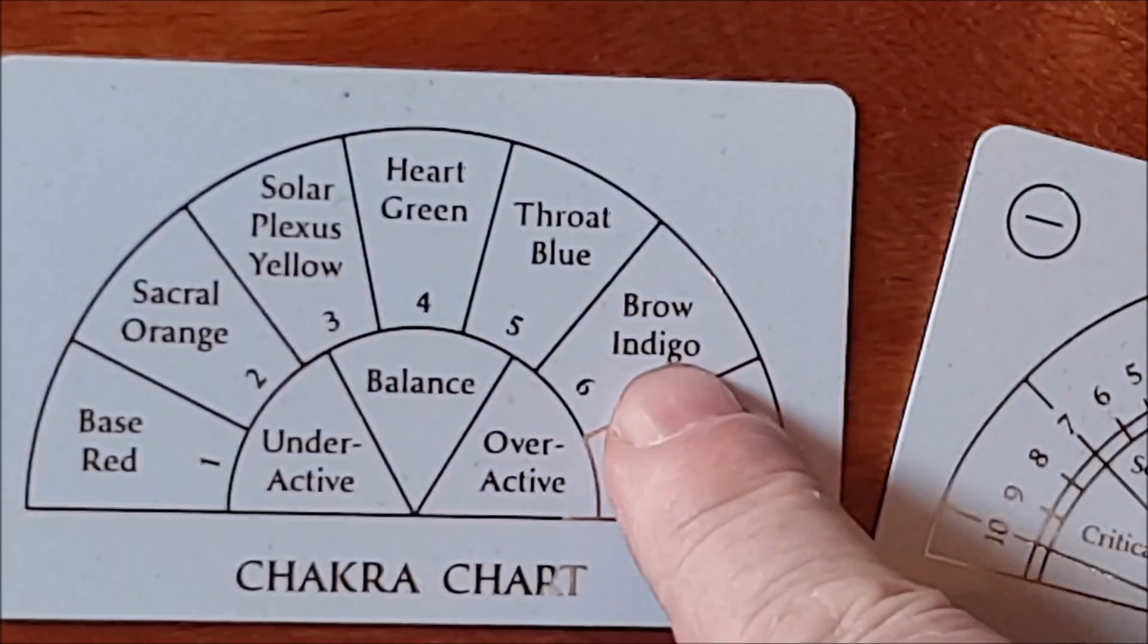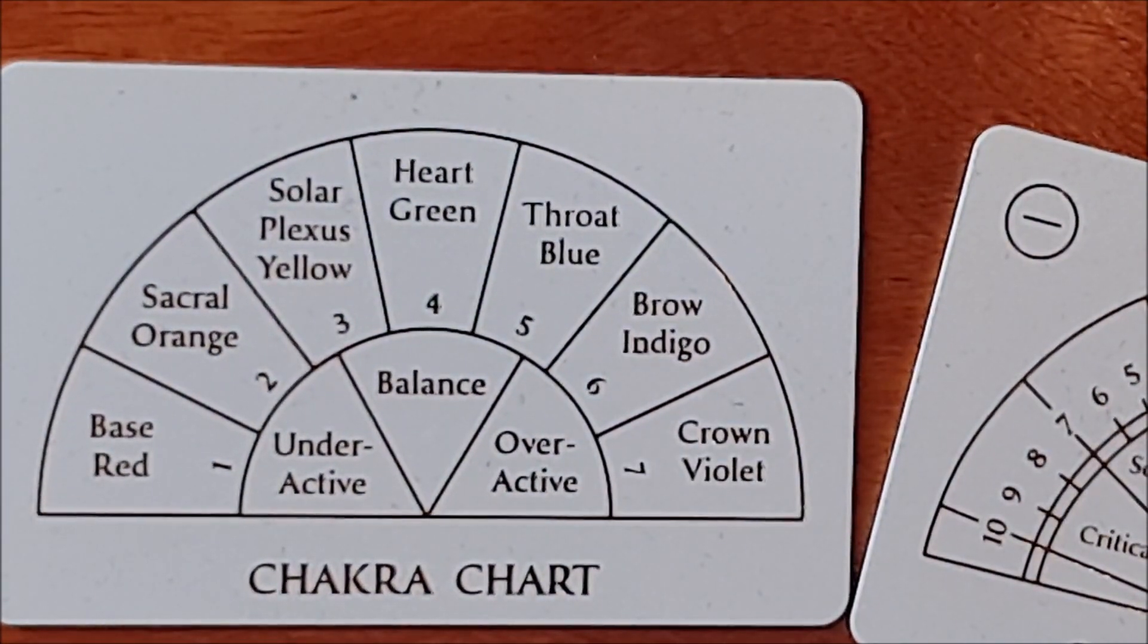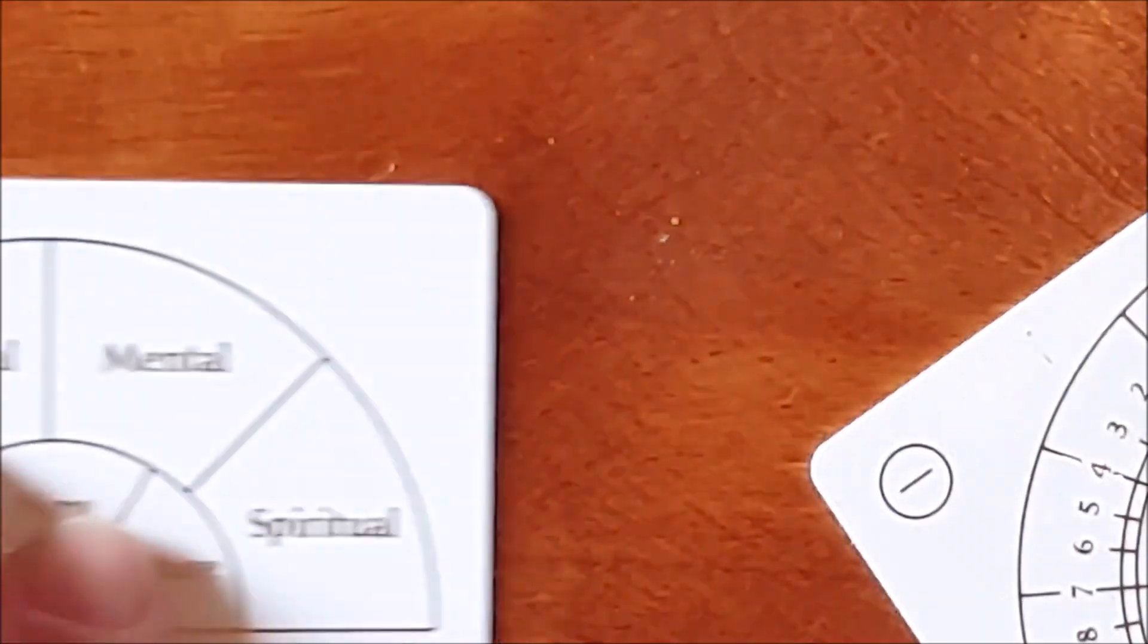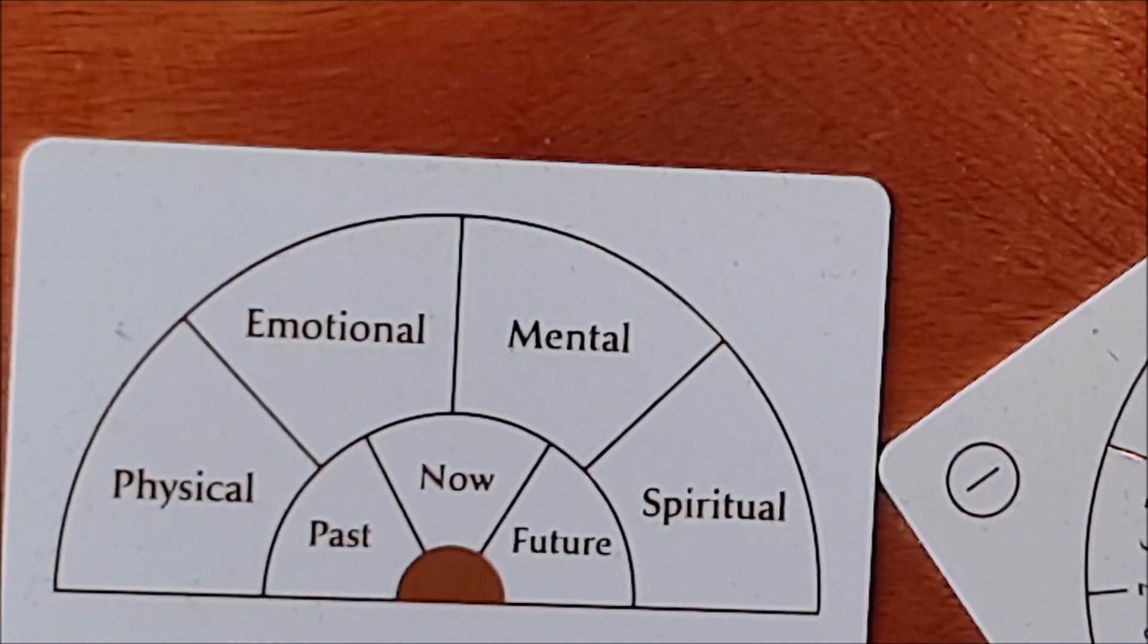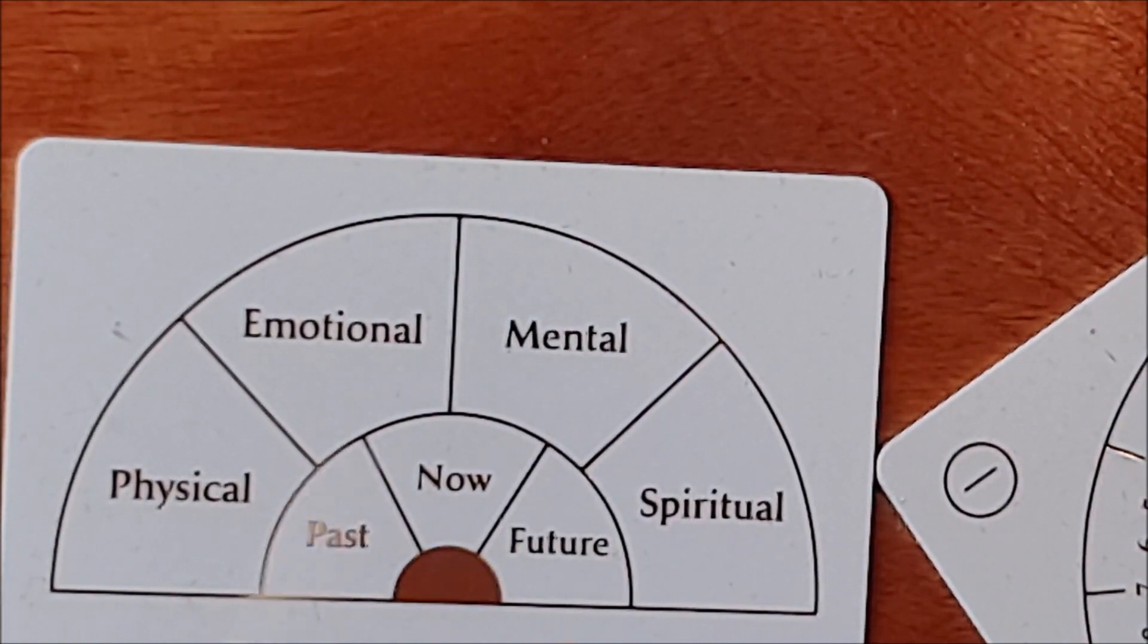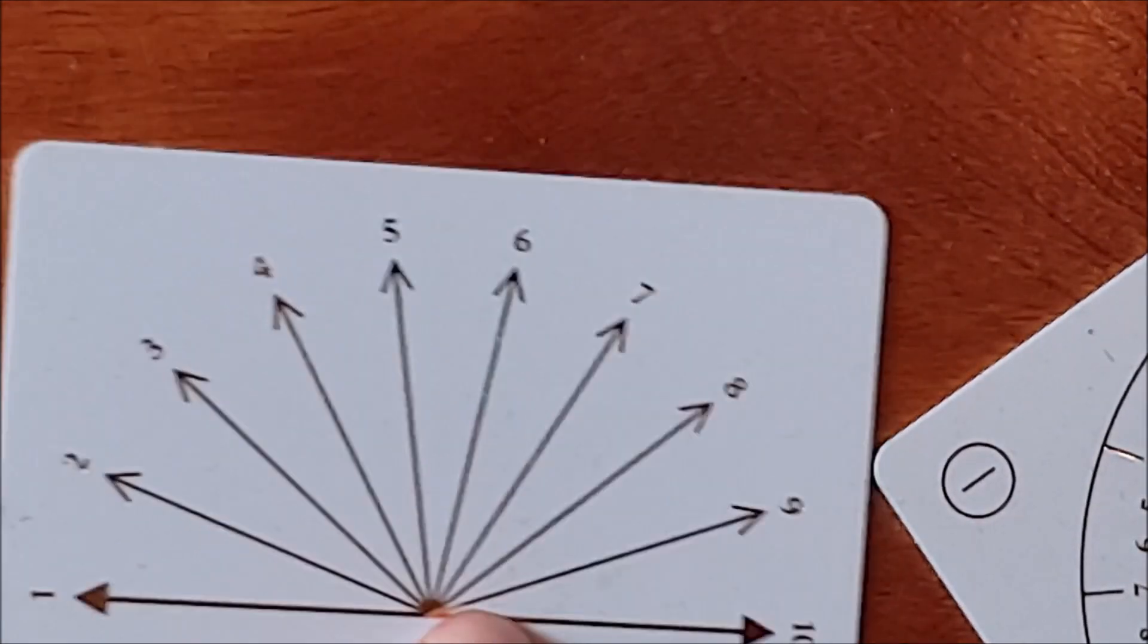Here's another one for dowsing the chakras. And here is another one: past, future, now, physical, emotional, mental and spiritual. So there's 6 charts here.